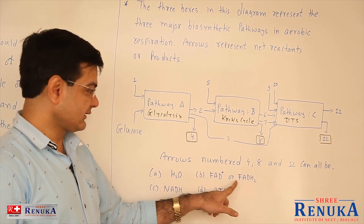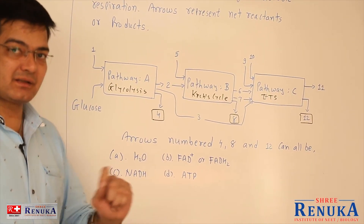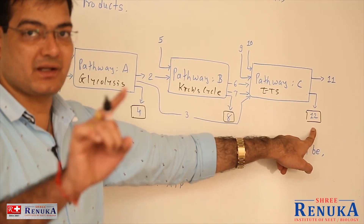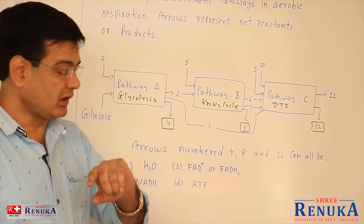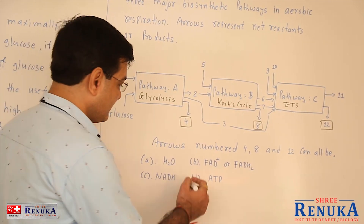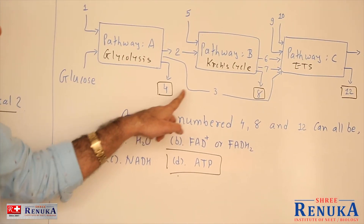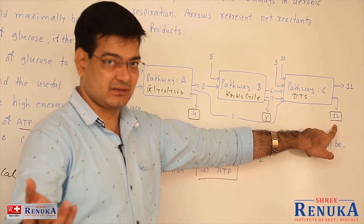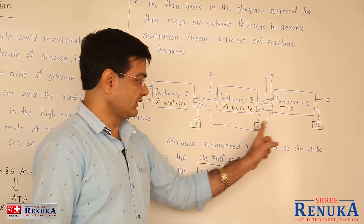If we talk about FAD or FADH2 and NADH: in glycolysis, NADH is a product; in the Krebs cycle, NADH is a product; but in ETS, NADH is not the product. Similarly, FADH2 can be formed only in the Krebs cycle, not in glycolysis and the electron transport system. So the answer must be ATP, as in glycolysis ATP is formed, in the Krebs cycle ATP is formed, and in ETS also ATP is the product. The most proper answer is ATP for arrows 4, 8, and 12.